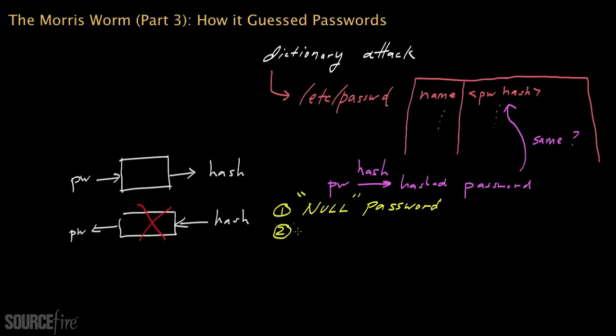The second thing the Morris worm tried is guessing that the user might have picked their username as the password. A lot of people do this sort of thing—they have a username, and they just make their password the same as their username. So for example, if the username happened to be jsmith, then the user's password might also be jsmith.